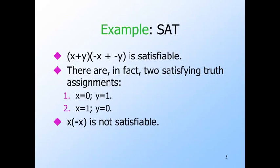There are only two truth assignments. X can be assigned true or it can be assigned false. If x is true, then NOT x is false, so the AND of expressions — one of which is true and the other is false — has value false. Similarly, if we assign x false, then x is false while NOT x is true. And the AND of these is again false.